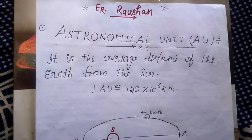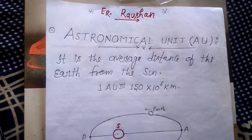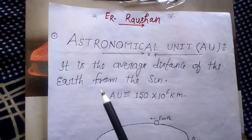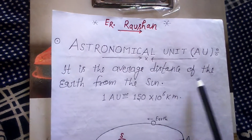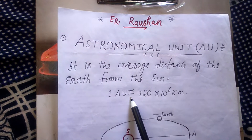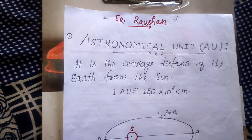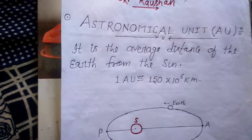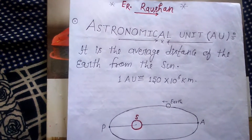Good morning friends. Today the topic is astronomical units. Astronomical units are always used to measure large distances. The definition of an astronomical unit is: it is the average distance of the earth from the sun. One astronomical unit is approximately 150 million kilometers. It is a unit of length — roughly the distance between the earth and the sun, equal to 150 million kilometers.